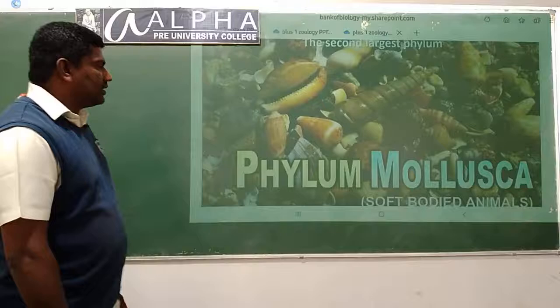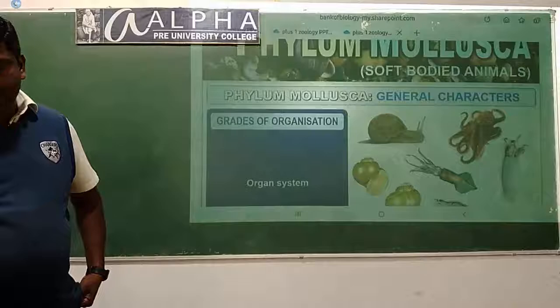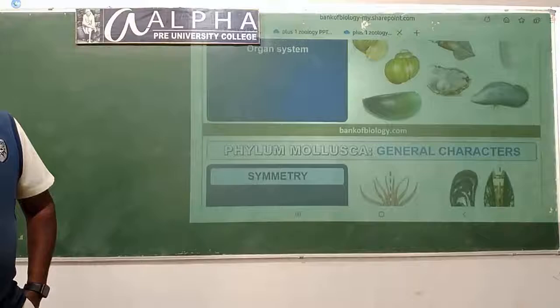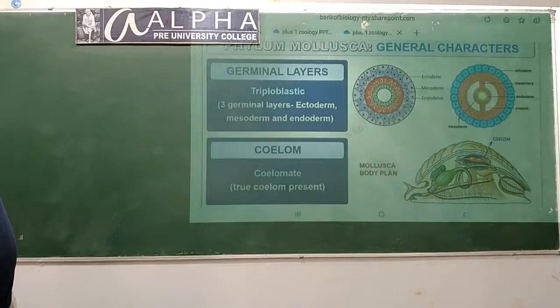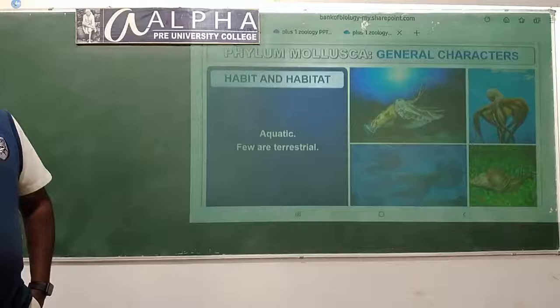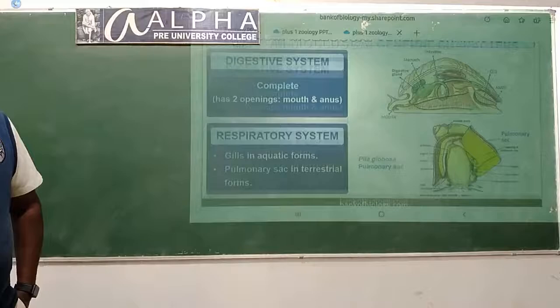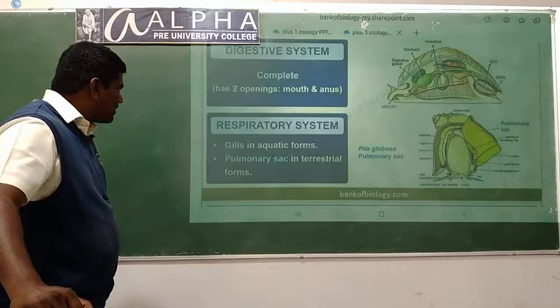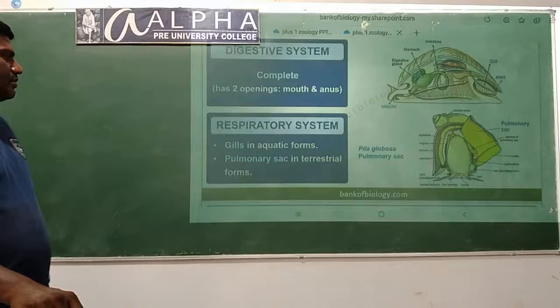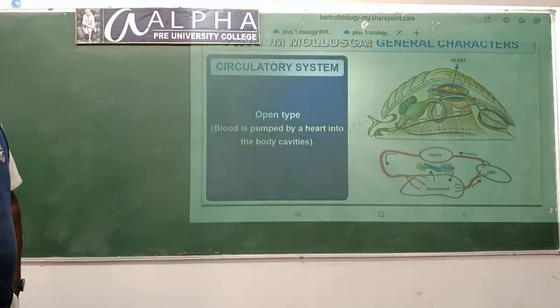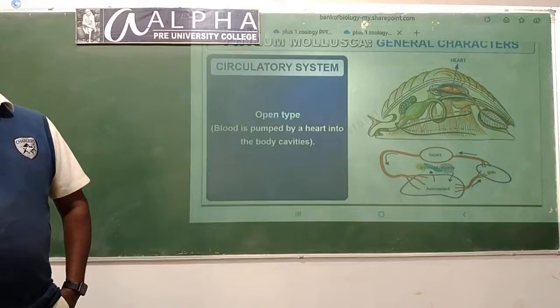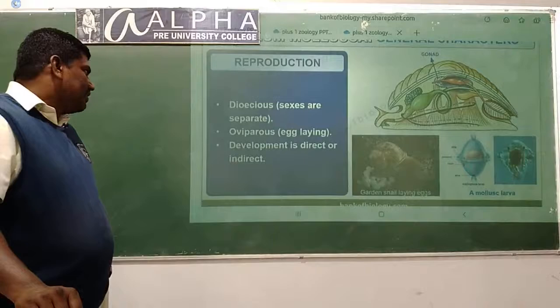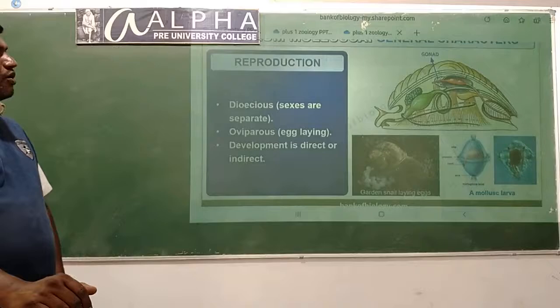Next is the second largest phylum - phylum Mollusca, commonly called soft-bodied animals. The grade of organization is organ system level. They are bilaterally symmetrical, triploblastic, and coelomate where the true coelom is present. They are aquatic and very few are terrestrial. Digestive system is complete with mouth and anus. Respiratory system: gills in aquatic forms, pulmonary sac in terrestrial forms. Circulatory system is open type. Reproduction: sexes are separate, egg-laying - oviparous. Development is both direct or indirect.